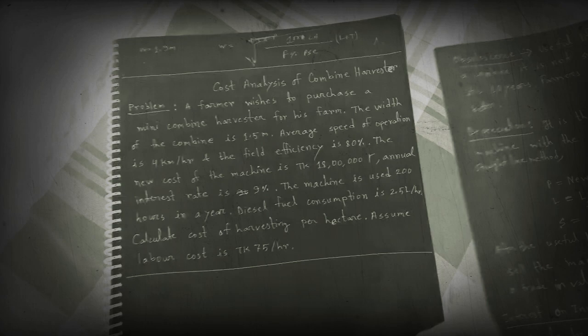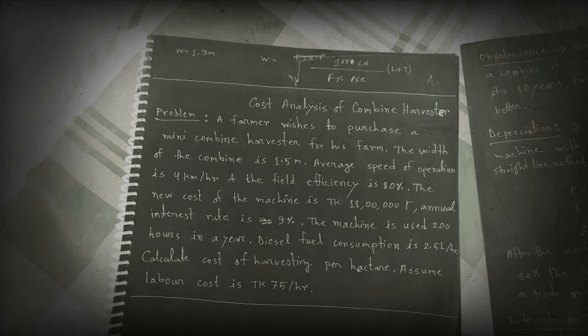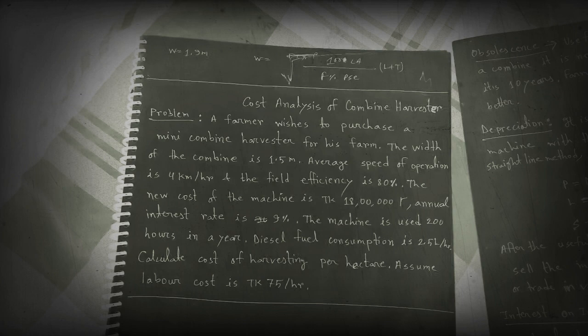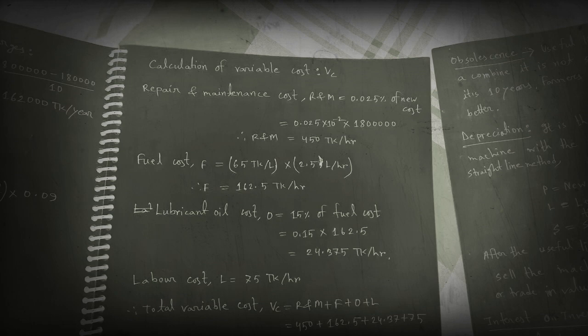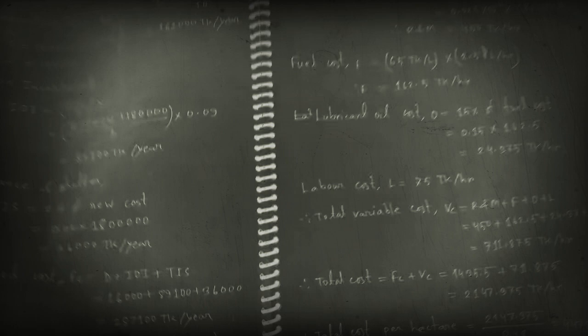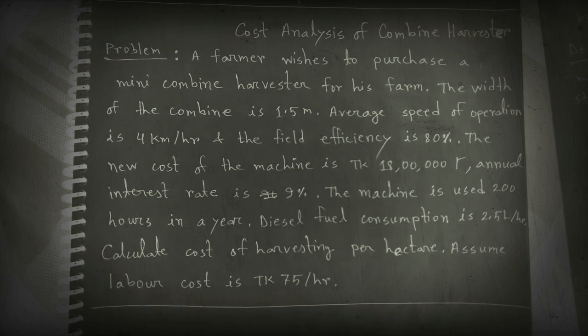Another fixed cost term is taxes, insurance, and shelter. When we buy a combine harvester, we must pay taxes, purchase insurance, and provide shelter for the machine. Tax, insurance, and shelter together are estimated at 2% of the new cost. We have covered these concepts and will solve the actual math problem in the next video. Thank you for watching.